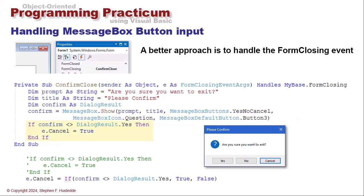And then if confirm does not equal dialog result dot yes. So if they click either the no or the cancel, then I'm going to say e dot cancel equals true. e is this form closing event args. And by setting the cancel to true, we basically shut down this closing of the form. That way, if the user accidentally clicks that red x in the upper right hand corner of the close button, we can verify they want to close the application and not have it automatically shut down on them.